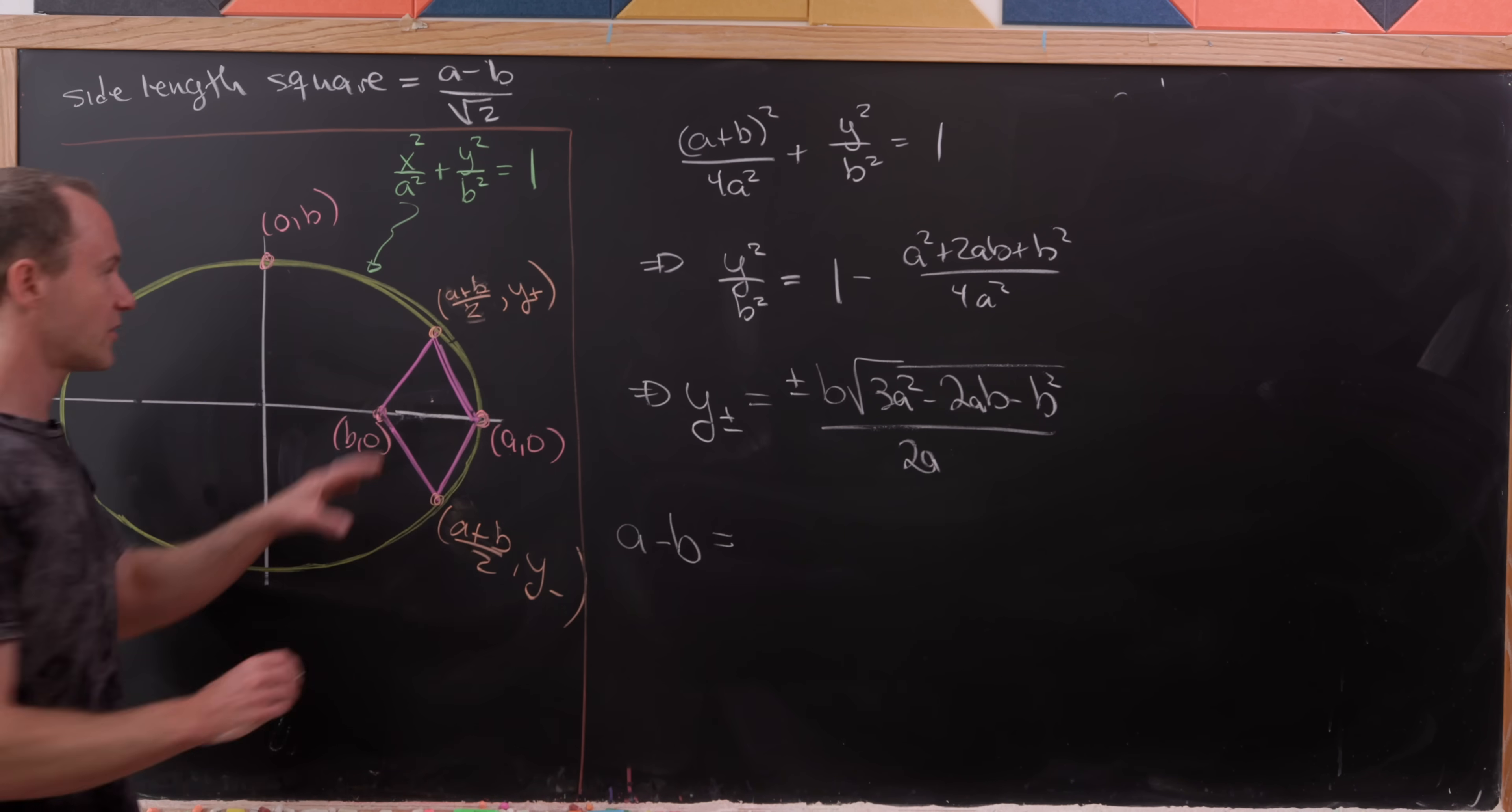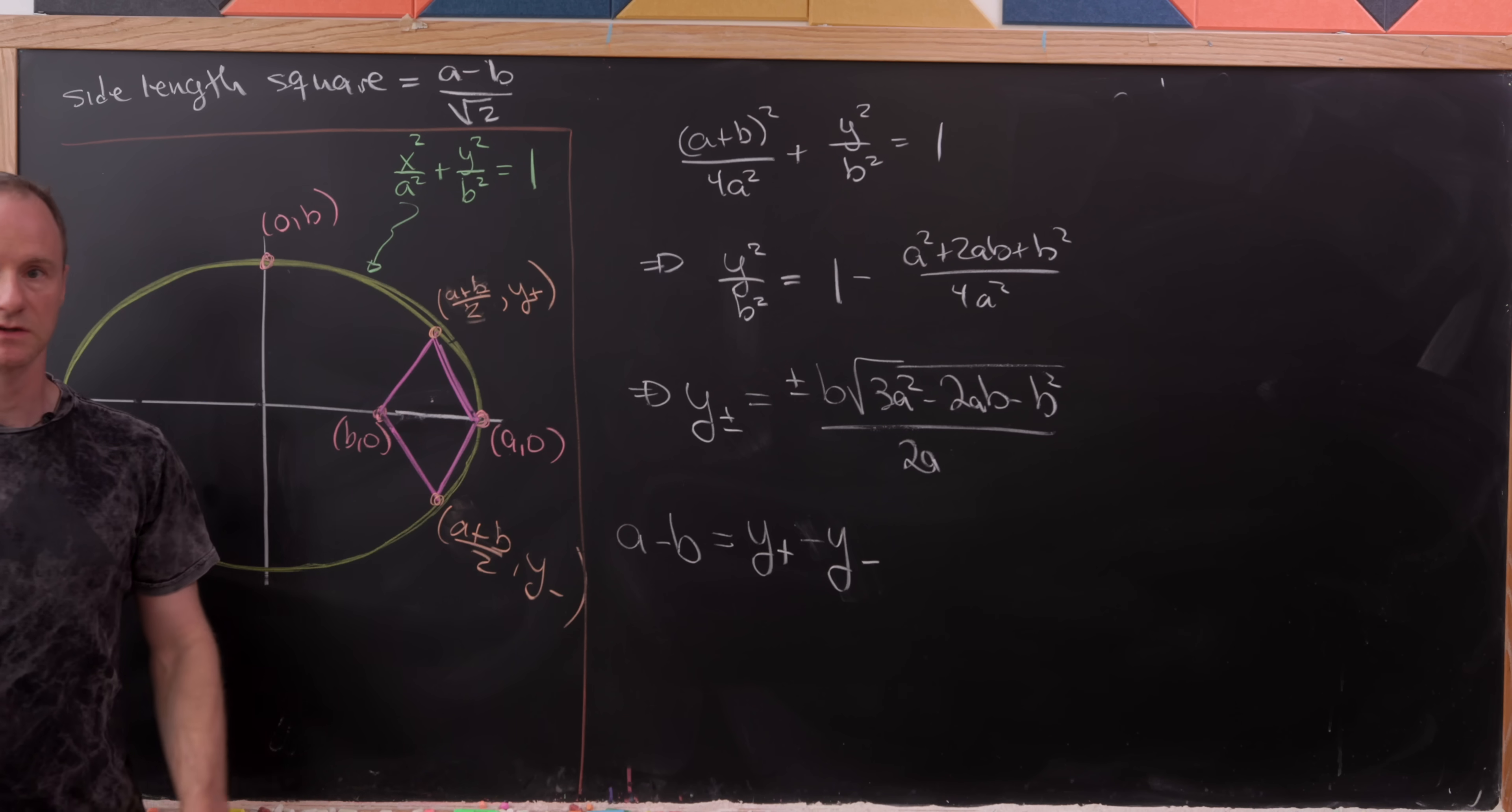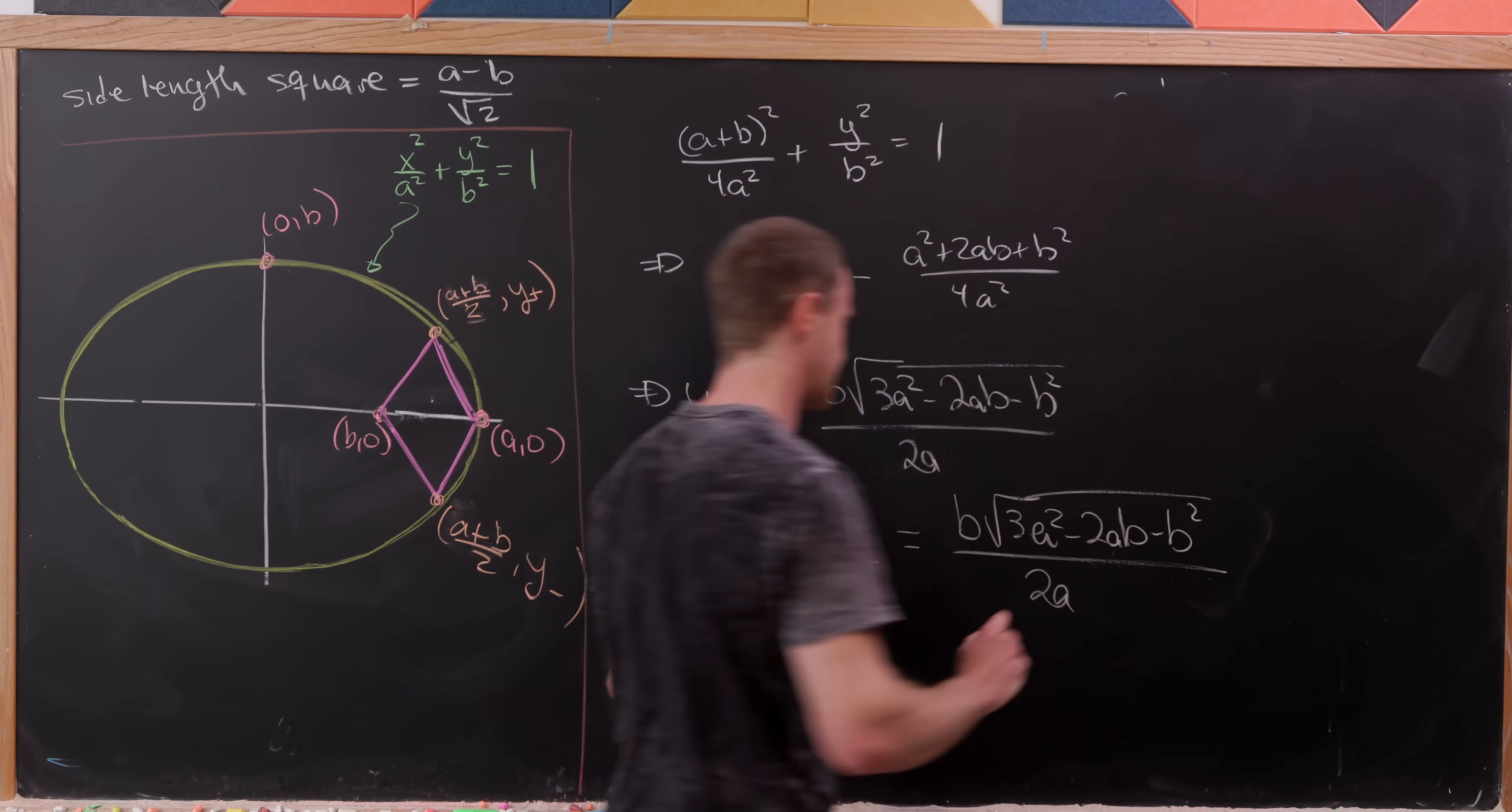And then the vertical diagonal has a length that's also pretty easy to calculate. That's y+ minus y− equals b√(3a² - 2ab - b²)/(2a).